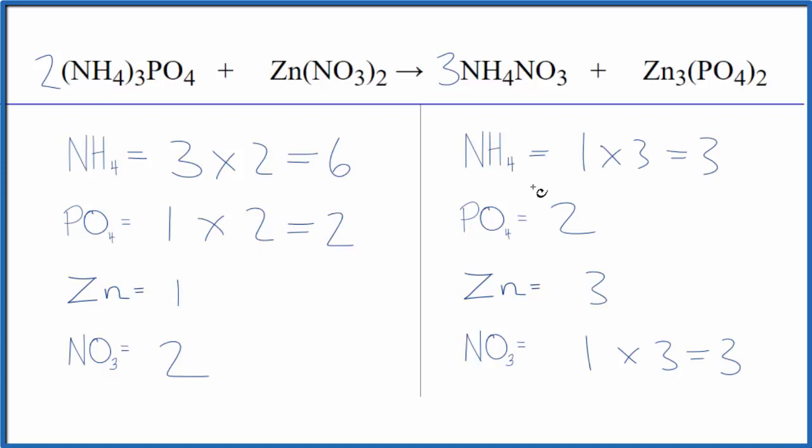Let's balance the zinc atoms next. I could put a three here - one times three gives me three of those, so the zinc atoms are balanced. Then I have two nitrates times three, two times three gives me six. We're almost done here because I can see a pattern.